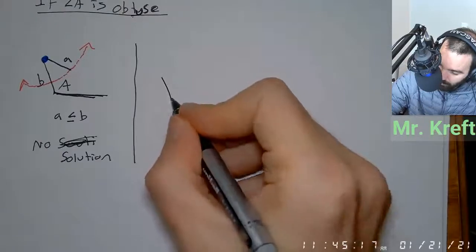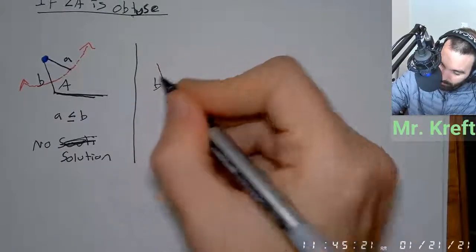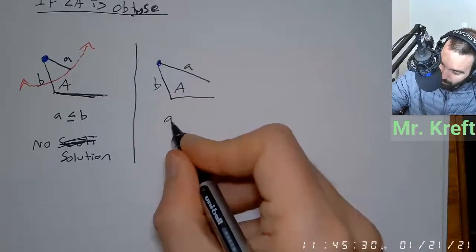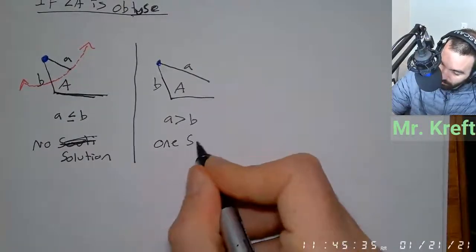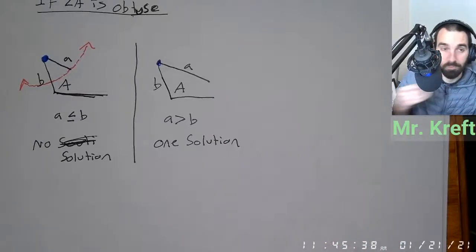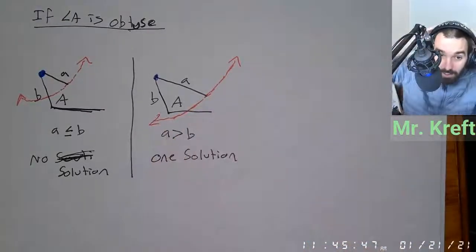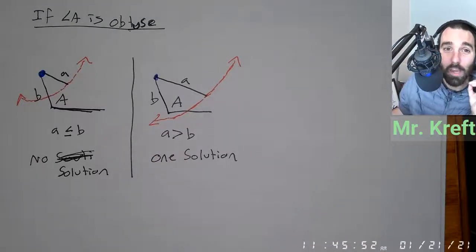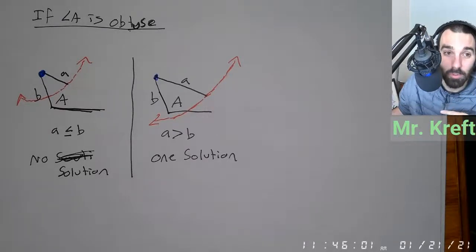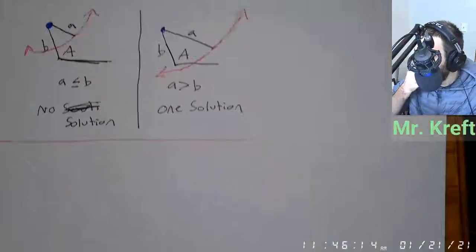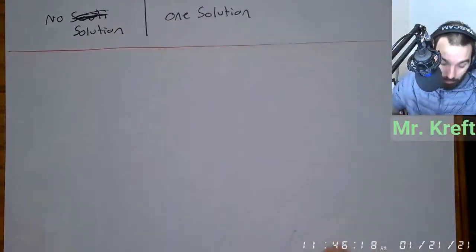The last obtuse case: if A is longer than B, you're going to have exactly one solution. What this means is we have to be precise in drawing our sketches for law of sines — we can't just wing it. We have to be a little bit precise: if this side is longer, I need to draw it longer. So you do have to have a little more precision in doing these problems.